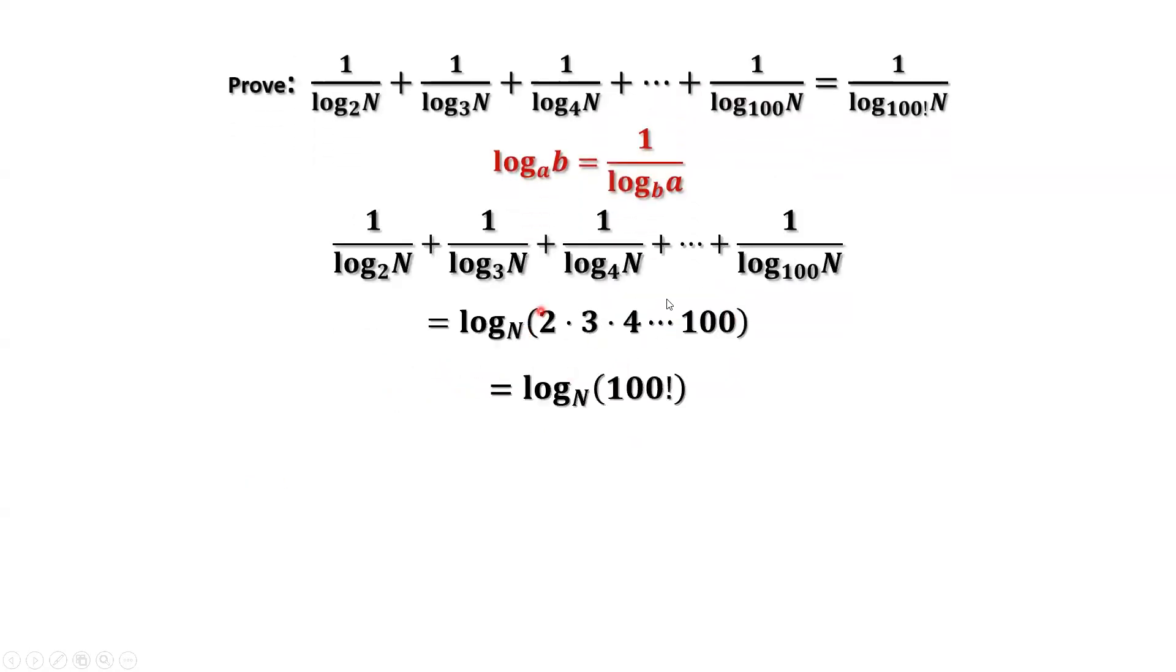What is the inside part of this? The inside part is 100 factorial. This equals log of 100 factorial to the base n, which converts back to 1 over log of n to the base 100 factorial. We have done the proof.